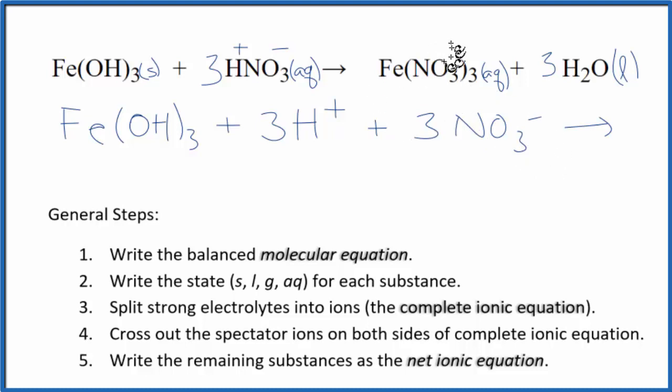For the products, we said nitrate was 1-, so we have three of them. This iron has to be 3+. So we'll have Fe³⁺, that's the iron(III) ion, plus we have three nitrate ions.